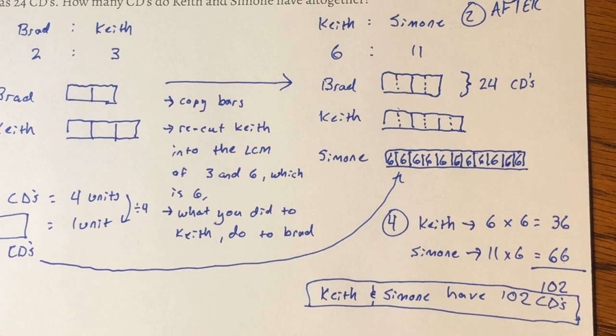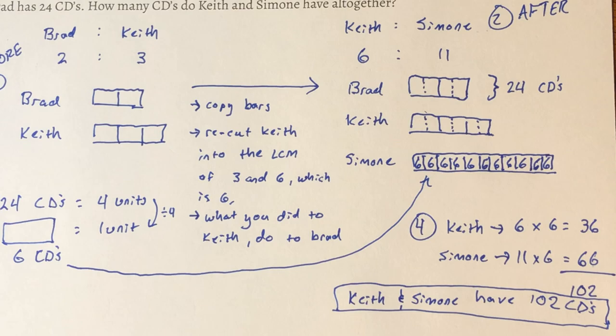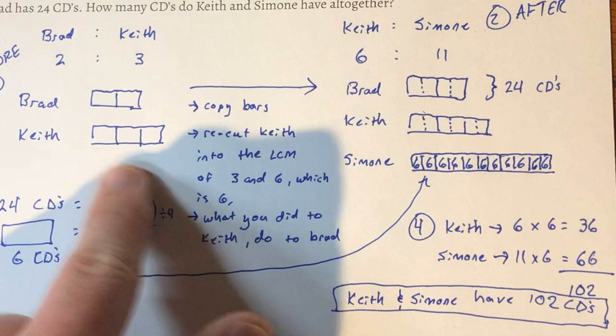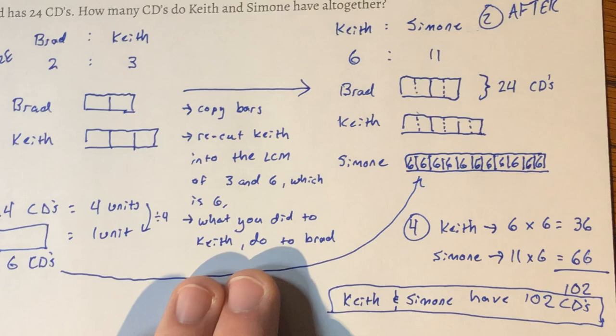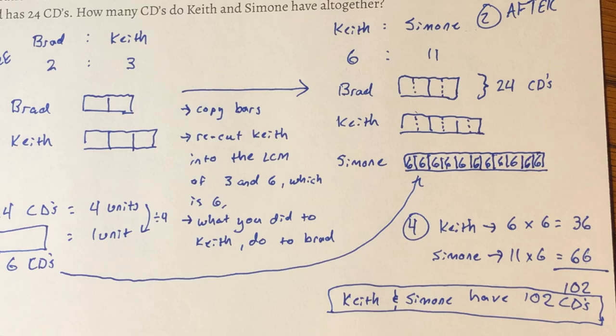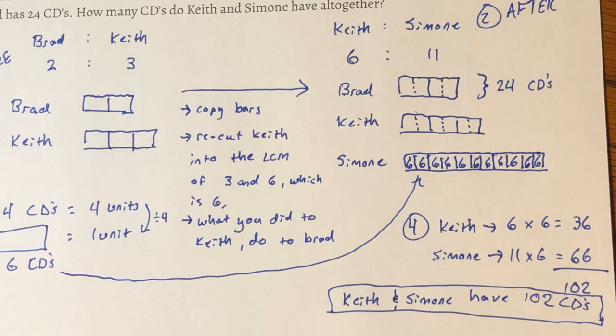And we're finished. It's really not a lot of work — you draw the bars, introduce Simone, and recut them. I know it looks like a lot, but it's not. However, there is a shortcut to start with the ratios and jump to the combined ratio right away.